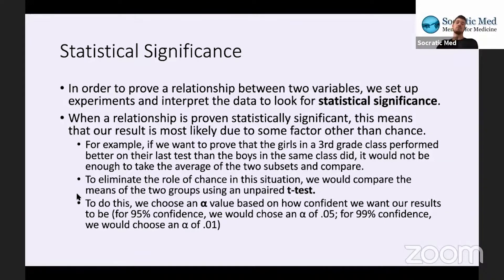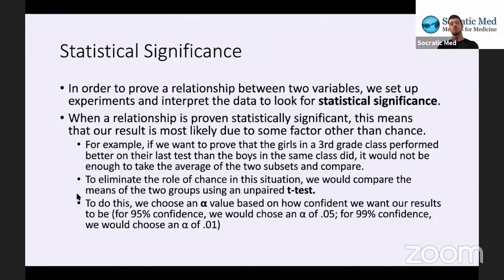The unpaired t-test would just be comparing two averages — like the 84 and the 85 — and we're doing a statistical analysis to see the likelihood of the result being due to chance, or whether the girls actually did better than the boys.